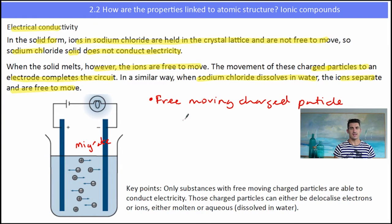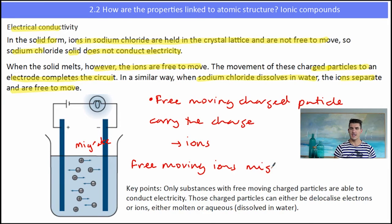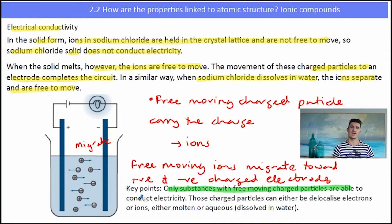So to conduct electricity, either molten or liquid, we must have free moving charged particles to carry the current. And in this case, the ions are the free moving charged particles when it's either molten or dissolved. The free moving charged particles are the ions, and in this case, they're migrating towards one of the electrodes, either the negatively charged electrode or the positively charged electrode. One of the key points for electroconductivity is only substances with moving charged particles are able to conduct electricity. And there's two types of charged particles. We can have delocalized electrons in metals, which we'll talk about in the next video, or we have ions that are able to move in a solution.